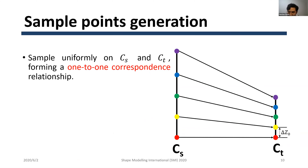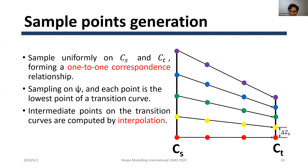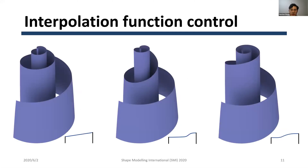We sample uniformly on CS and CT with the same number of samples, forming a one-to-one correspondence. Similarly, we sample on phi. Afterwards, we get an intermediate point on each transition curve by interpolation. The lowest point of each transition curve overlaps with a point on phi, giving us the point cloud for the entire model. We provide a control curve for users to edit the interpolation function to have more freedom over the surface shape — it is a cubic spline with natural boundary.